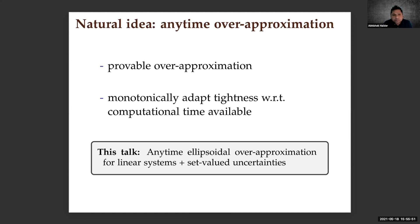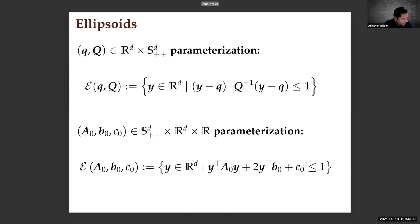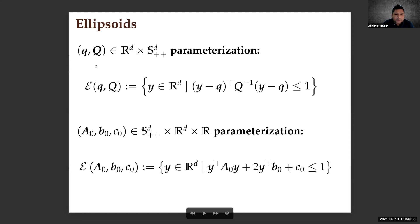I focus on ellipsoids for the simple linear system setting with set-valued uncertainties. The question is: can we modify existing algorithms in an anytime fashion? Ellipsoids have well-known parameterizations. One is the (q, Q) parameterization: small q is the center vector of the ellipsoid (a d-dimensional vector), and Q is a symmetric positive definite shape matrix. There is also the ABC parameterization, and one can go back and forth between them.